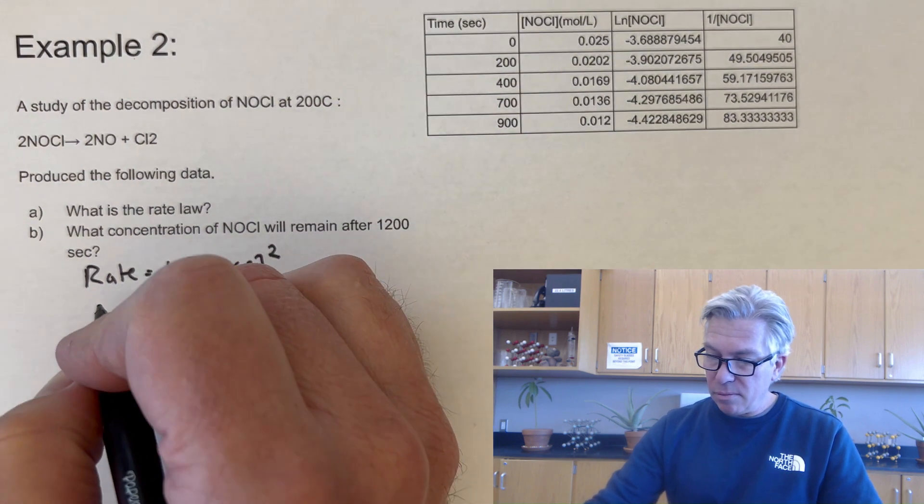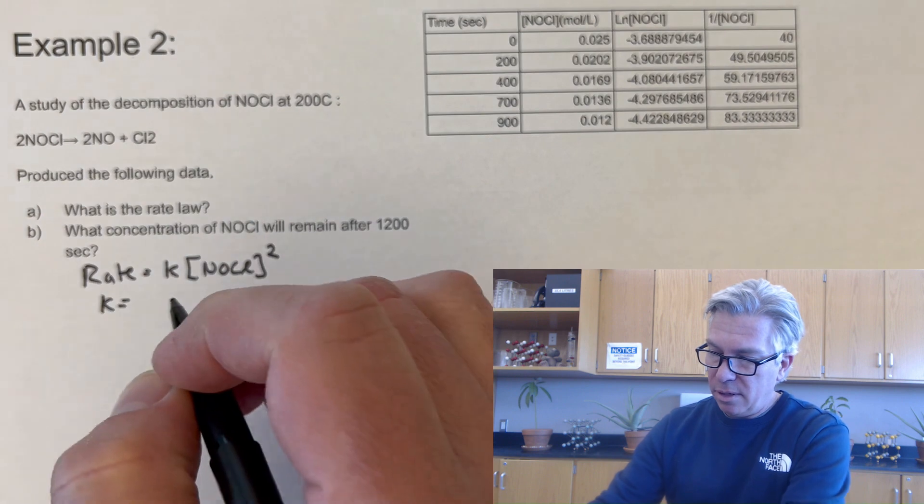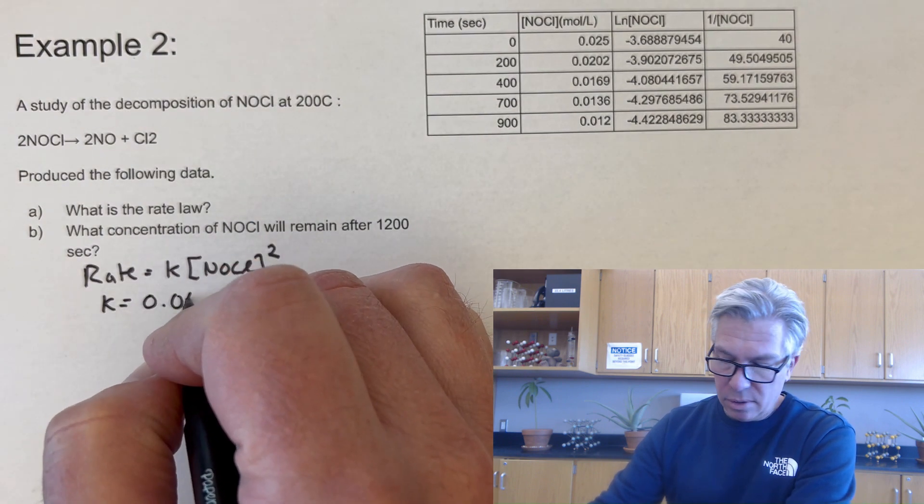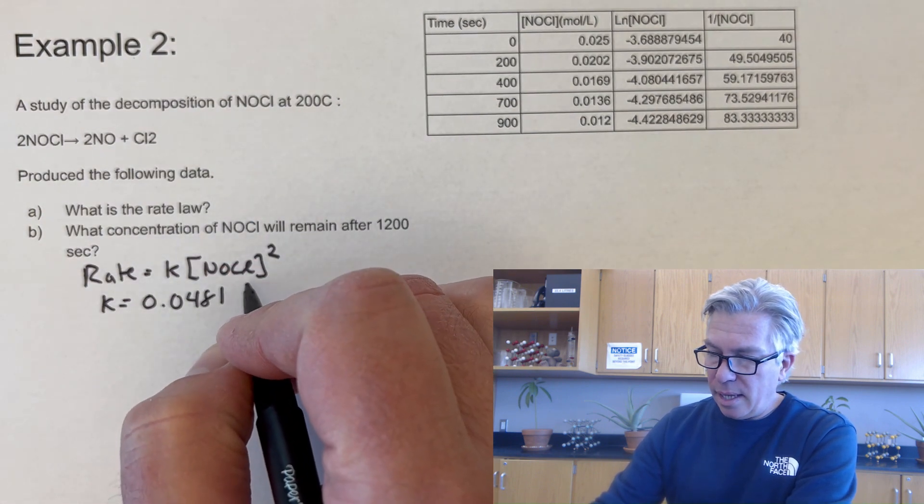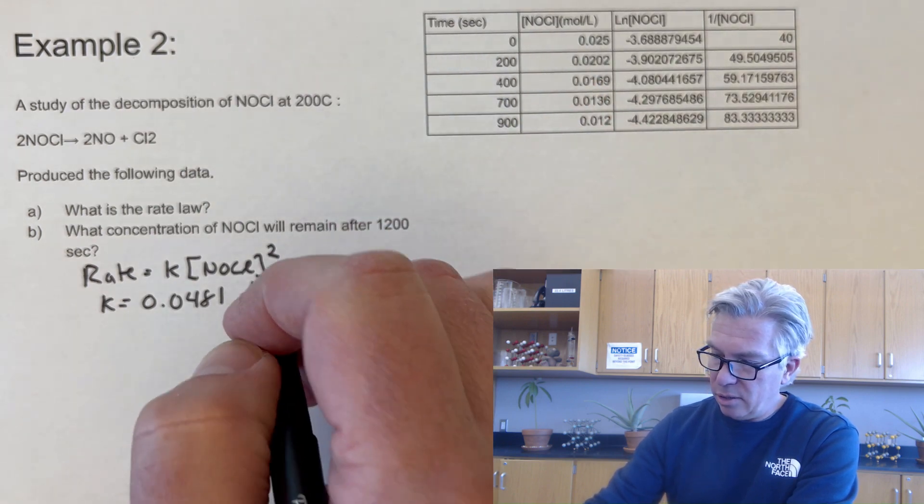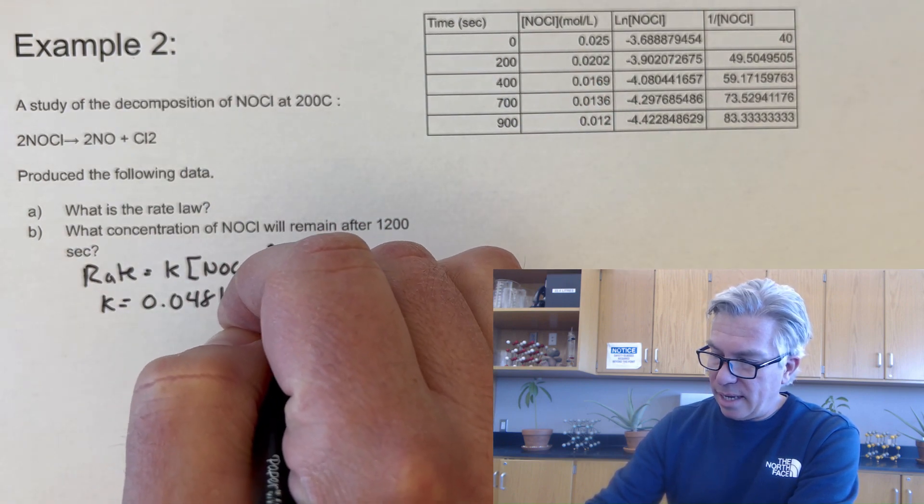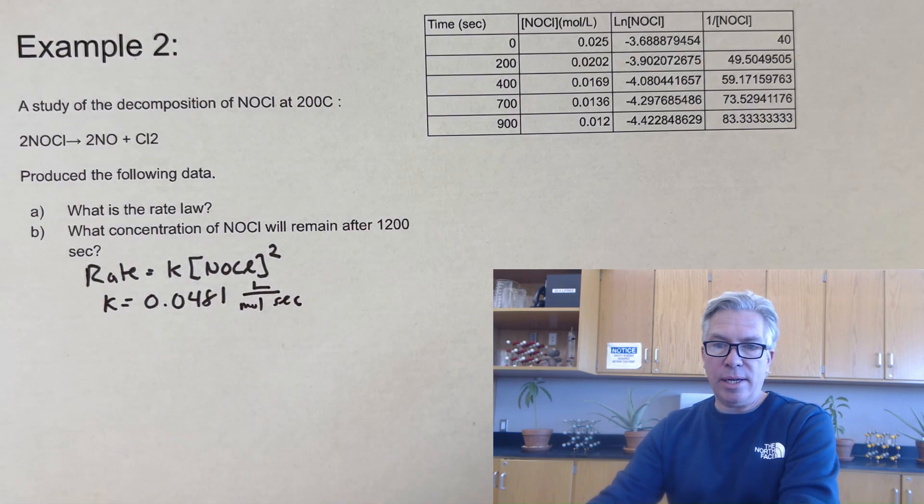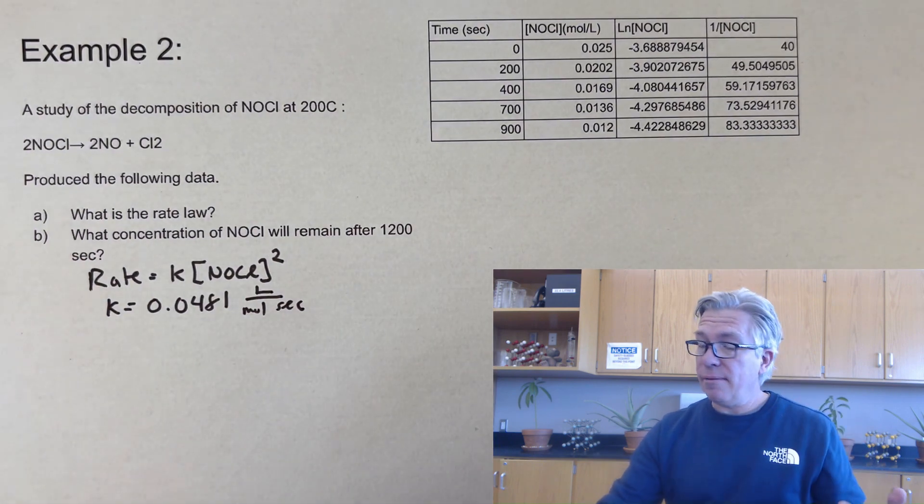Okay. Now just for fun, I'm going to note the rate constant from the graph 0.0481. And that again is going to be an inverse concentration that's moles per liter per second. So liters per mole second is my rate constant there.